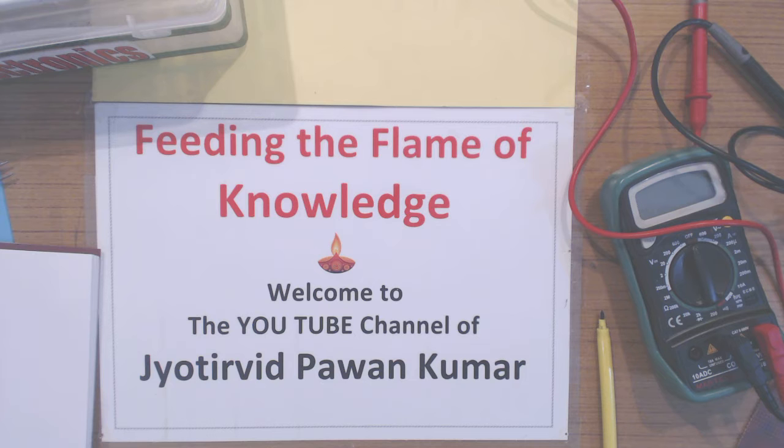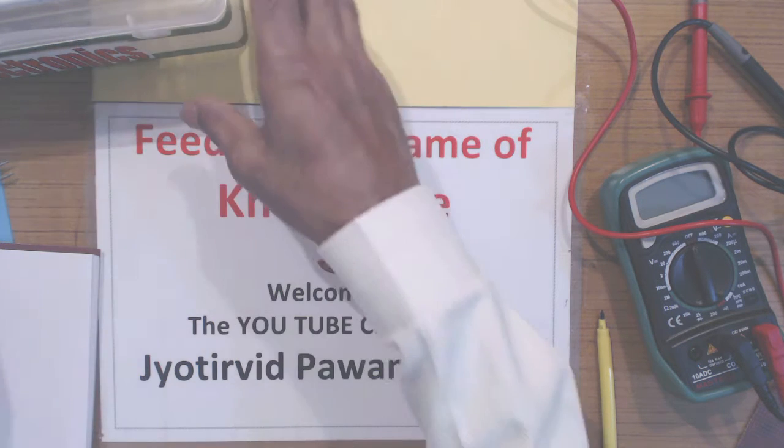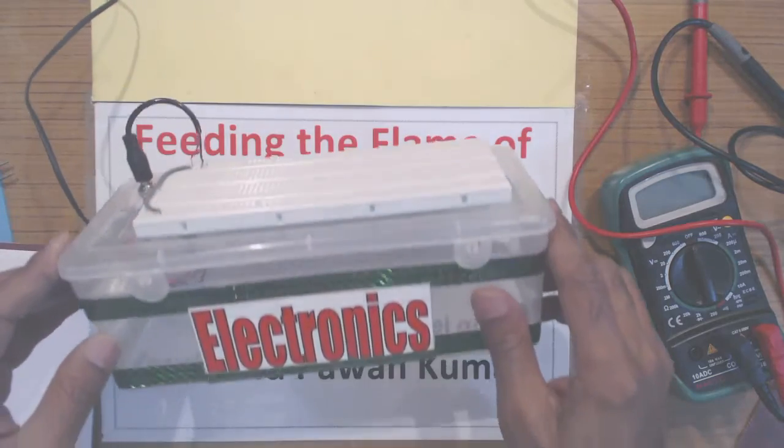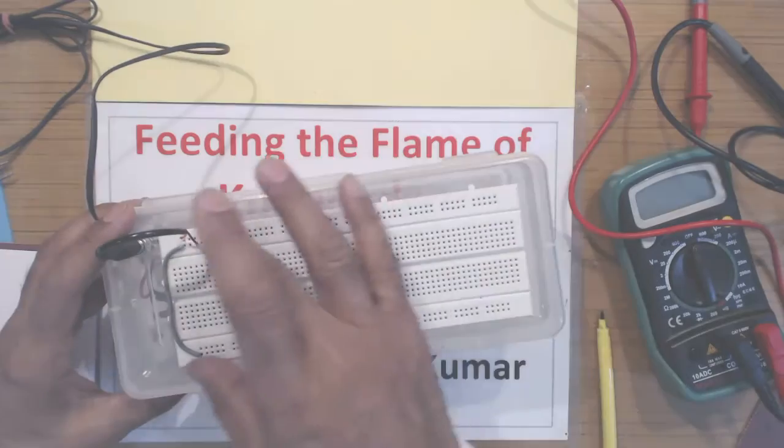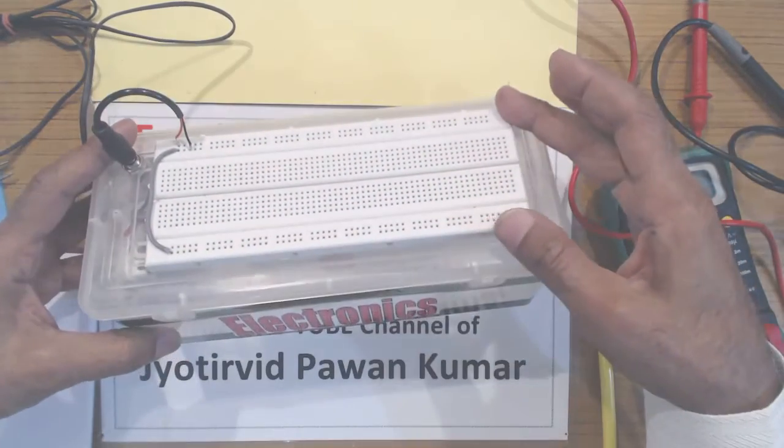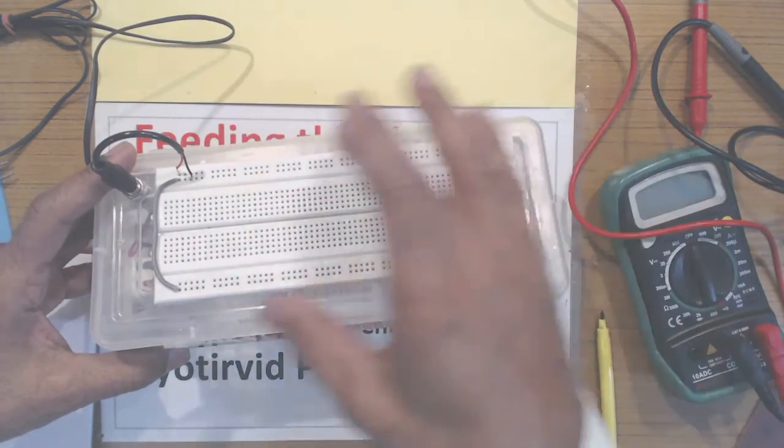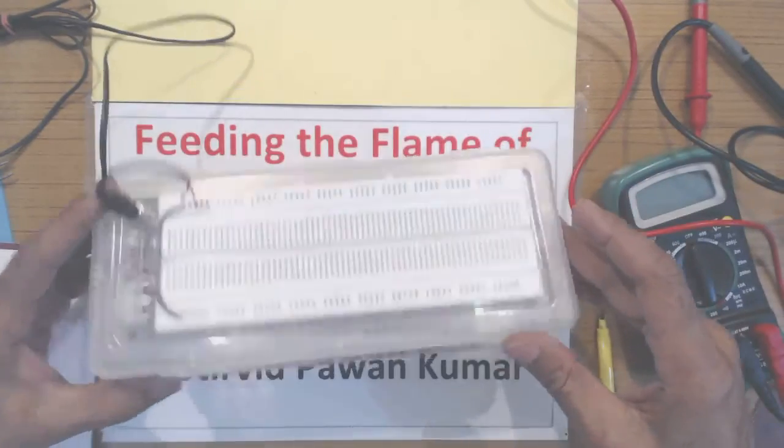I will make this circuit on a breadboard which I described in my previous video. This white portion is a breadboard you can purchase from electronic component shops or online. It's very cheap and I have fitted this on top of a plastic box.